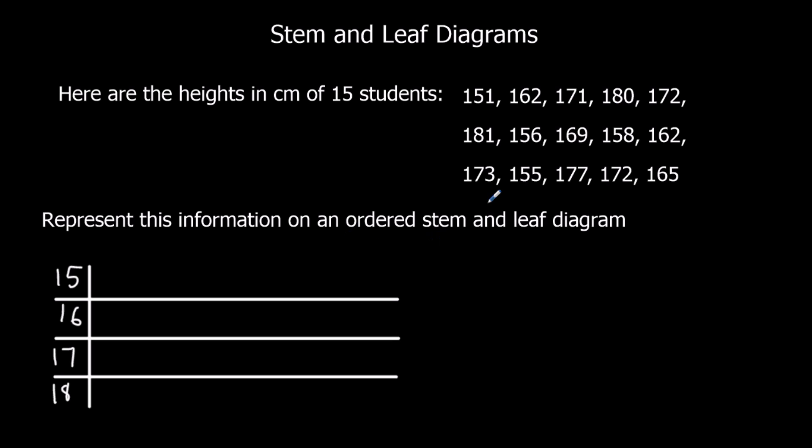Okay, so again it's ordered, so we're going to start with the lowest units. I've got a zero there - 180. So now I'll write a key: 18, 0 equals 180 centimeters. That's my key. Make sure you do that every time with stem and leaf.